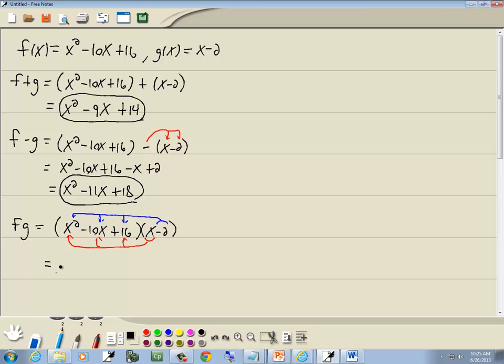x times x squared is x to the third. x times negative 10x is negative 10x squared. x times 16 is 16x. Negative 2 times x squared is negative 2x squared. Negative 2 times negative 10x is positive 20x. Negative 2 times 16 gives us negative 32.